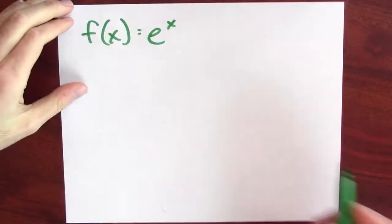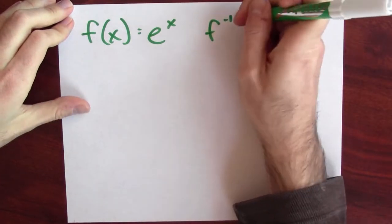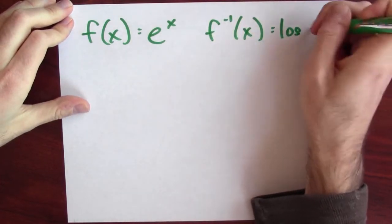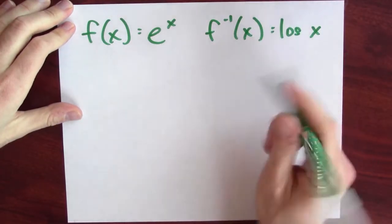Once we've got this new function log, we can ask, what's the derivative of log? So if f of x is e to the x, the inverse function is log. If I want to now differentiate log, I can use the inverse function theorem.